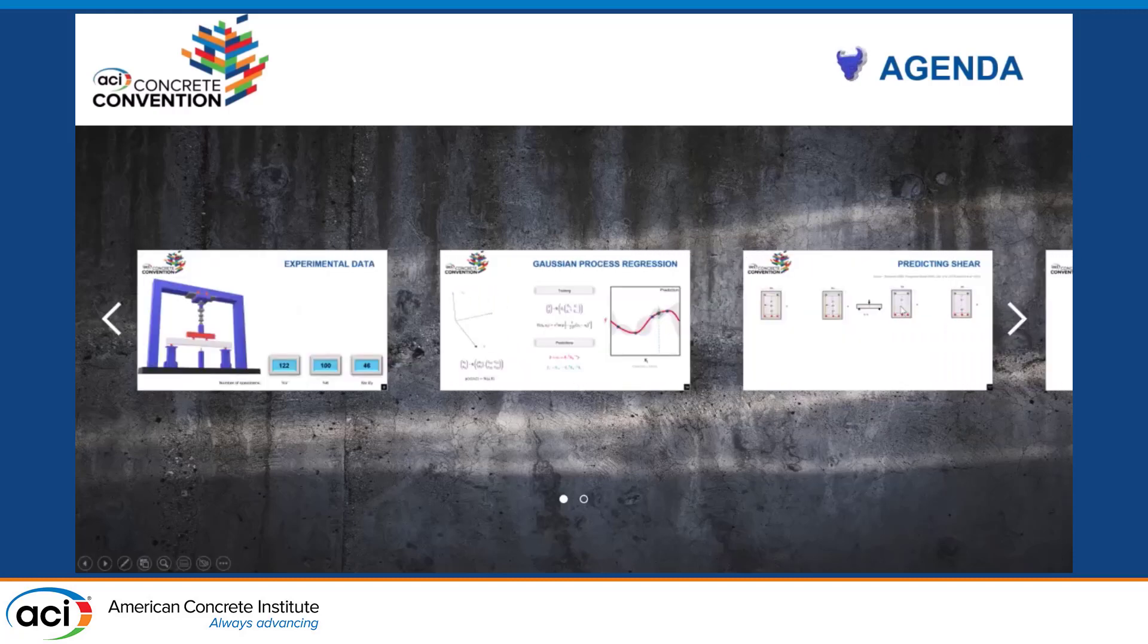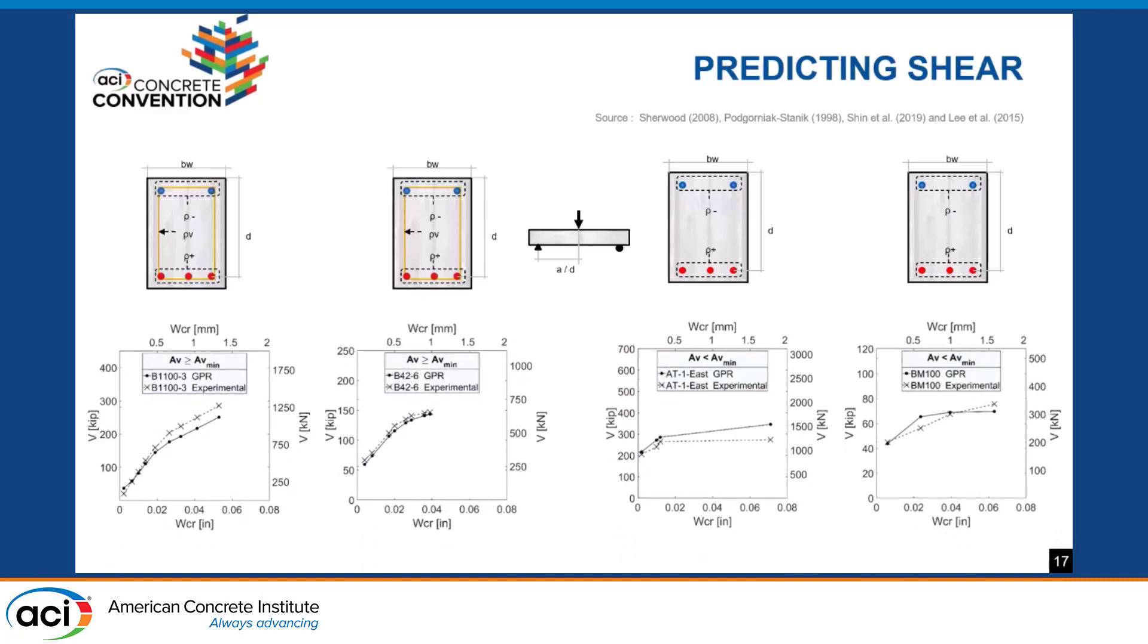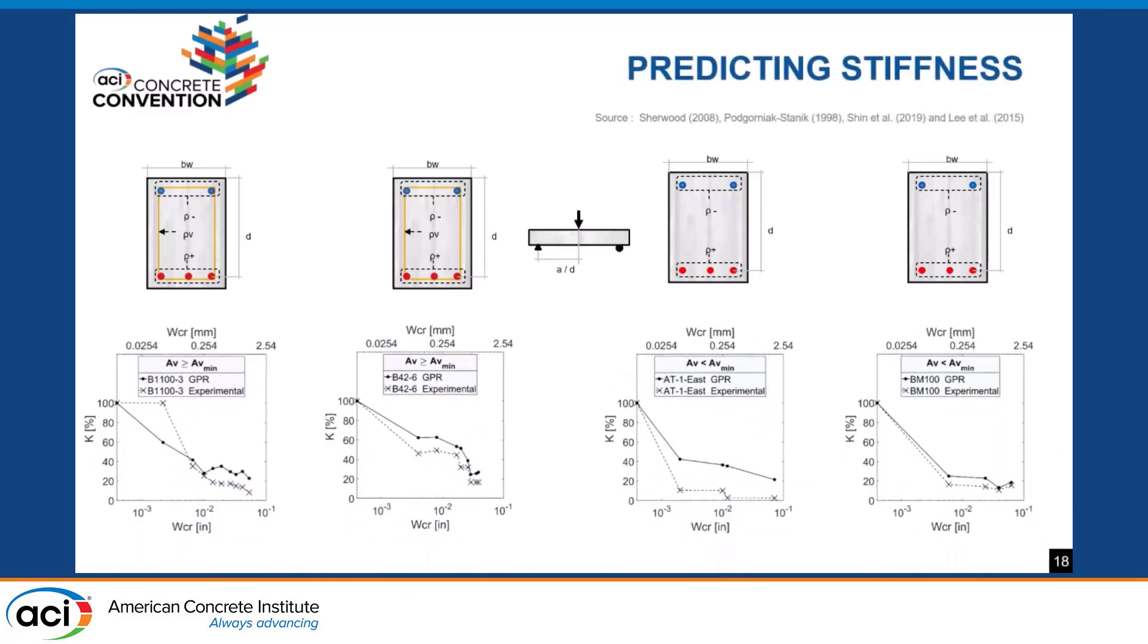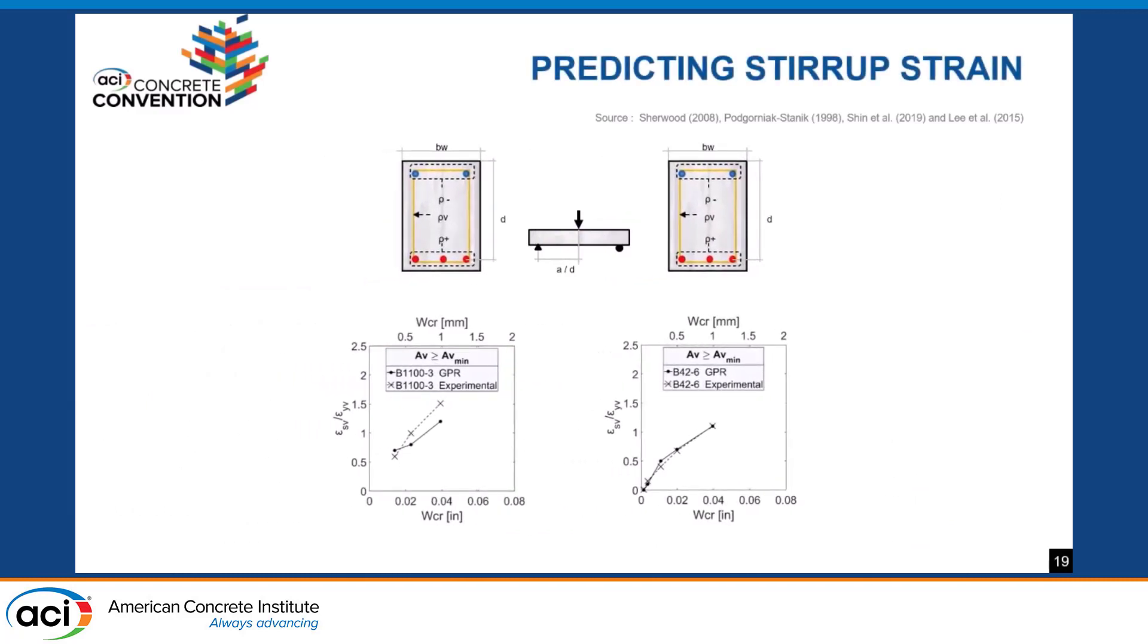This section shows predictions in beams that were not part of the training sets. On the left side, you have predictions on beams with shear reinforcement. On the right side, beams without shear reinforcement, or at least less than what ACI prescribes. Here we have predictions of shear history. The continuous lines represent the predictions from the algorithms, and the dash lines represent experimental values. We also have histories for stiffness and predictions of strain for those beams with stirrups.